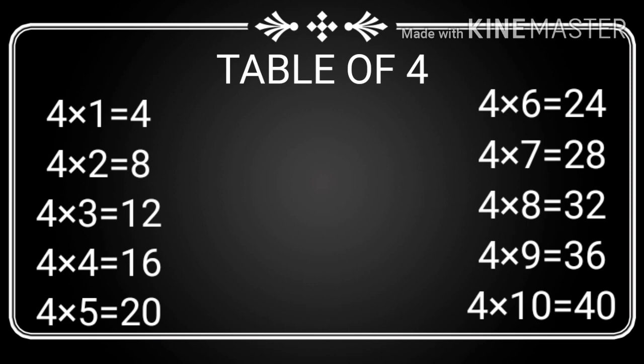4 nines are 36, 4 tens are 40. Let's say it again: 4 ones are 4, 4 twos are 8, 4 threes are 12, 4 fours are 16, 4 fives are 20, 4 sixes are 24, 4 sevens are 28, 4 eights are 32, 4 nines are 36, and 4 tens are 40.